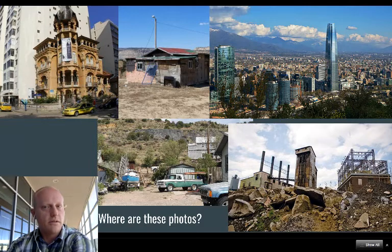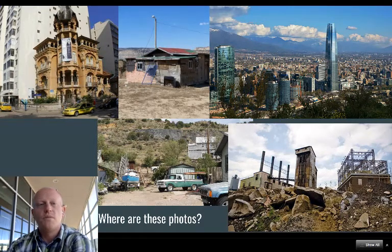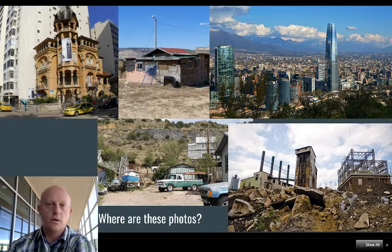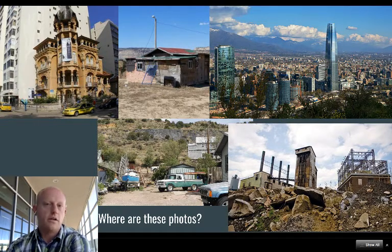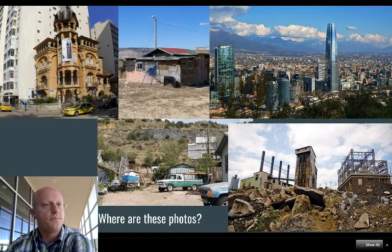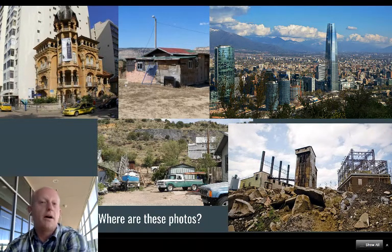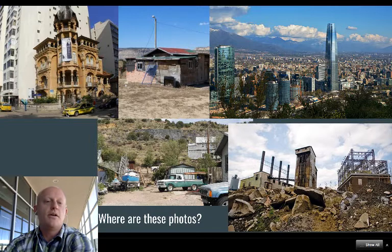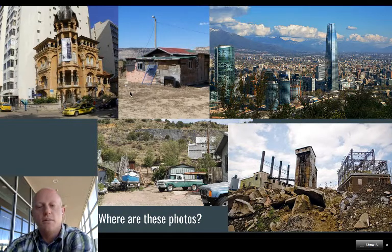To further layer another set of questions on how we look at the world, take a moment and think about these photos. If you had to categorize them as either the Global North or Global South, the first world or third world, where would you put them and why? The photos you would expect to be from the Global South are actually from the Global North, and vice versa.